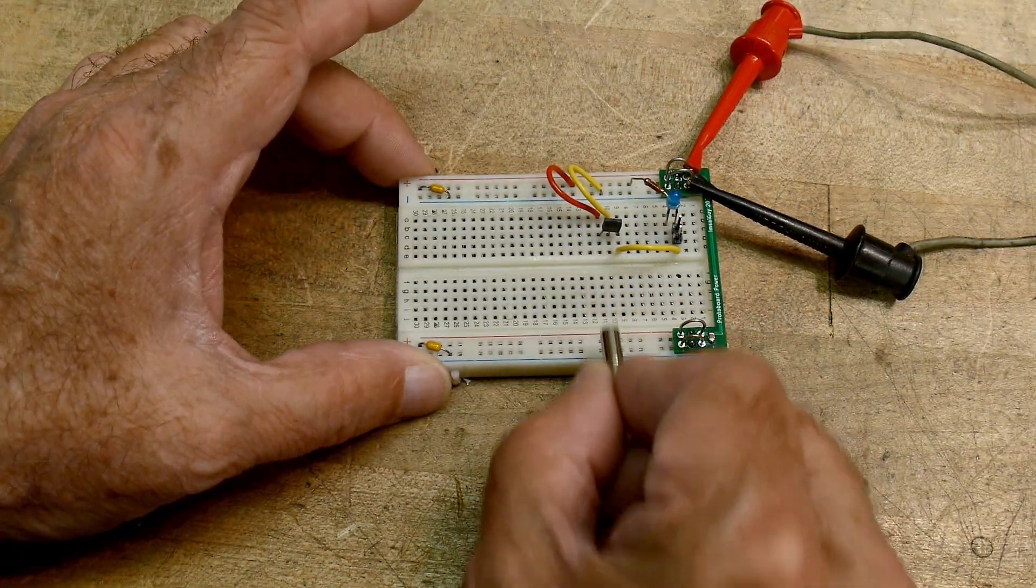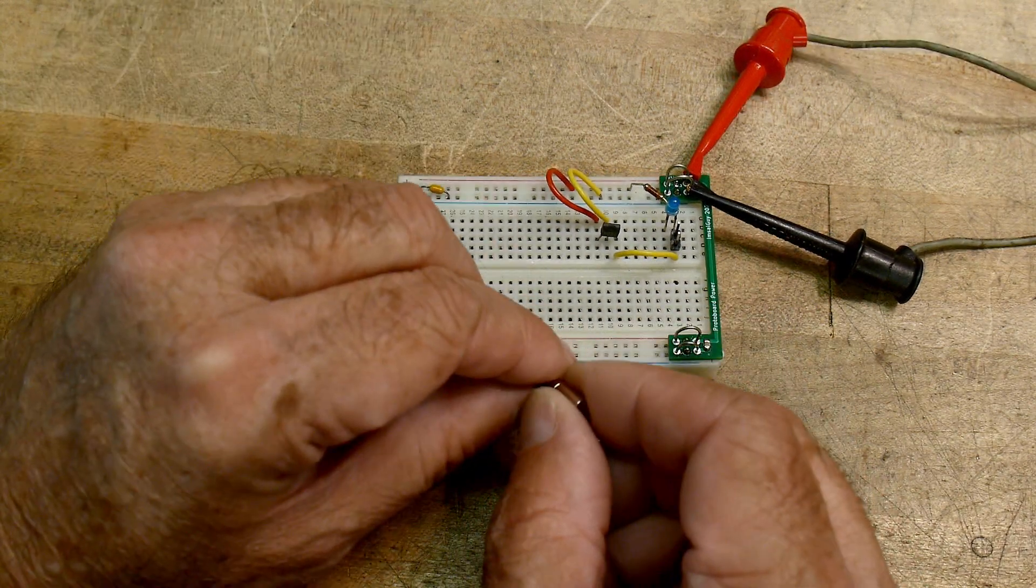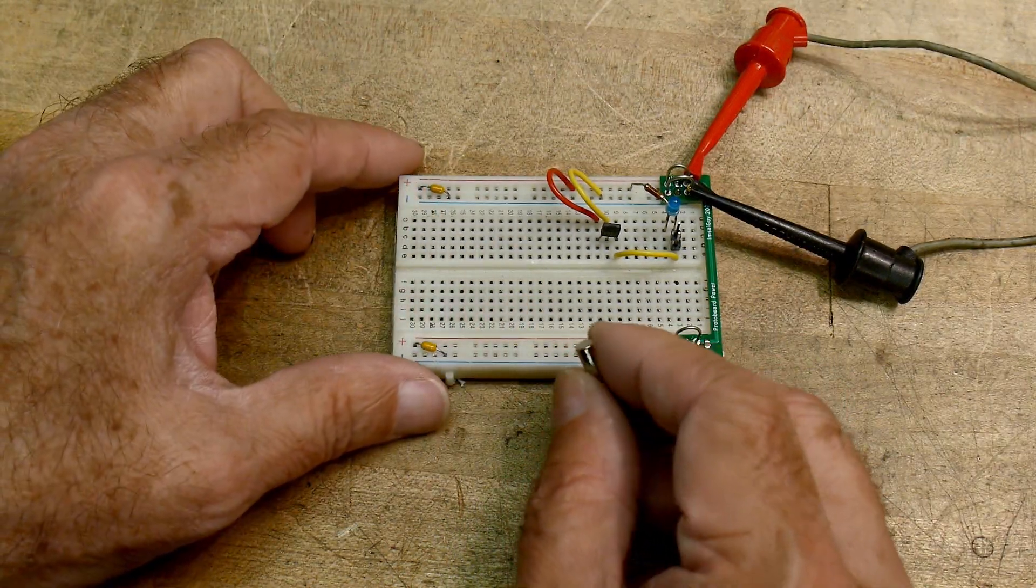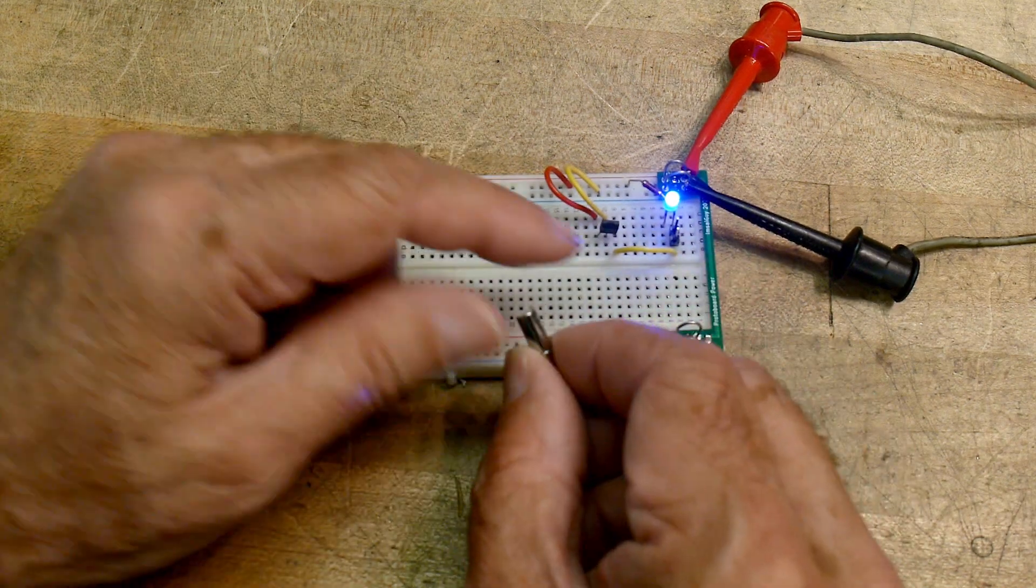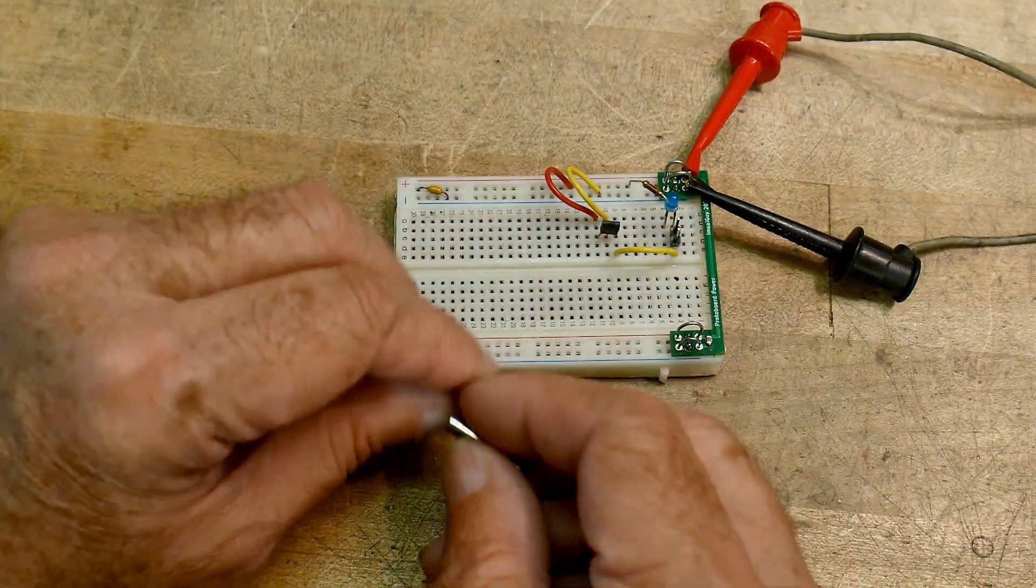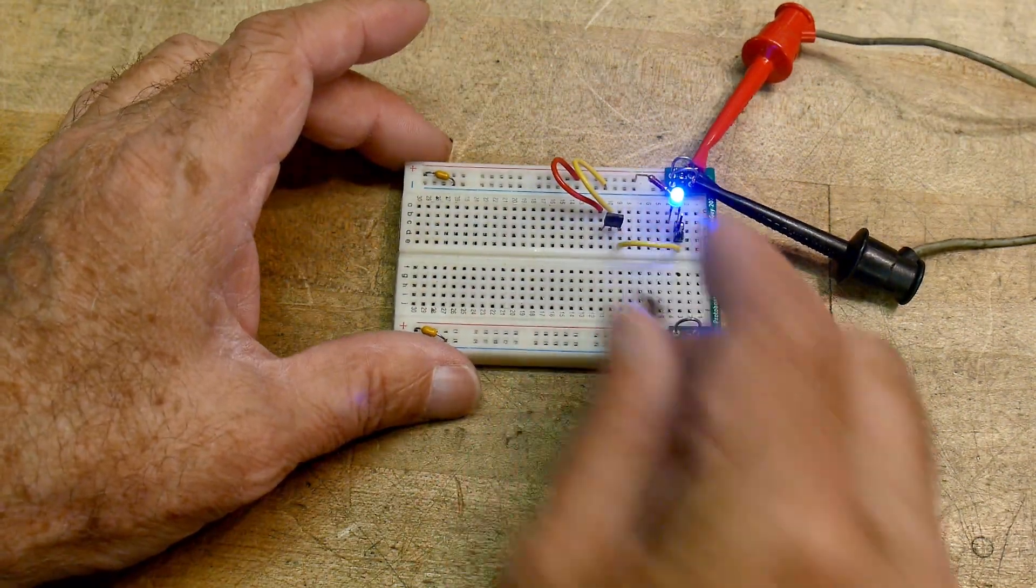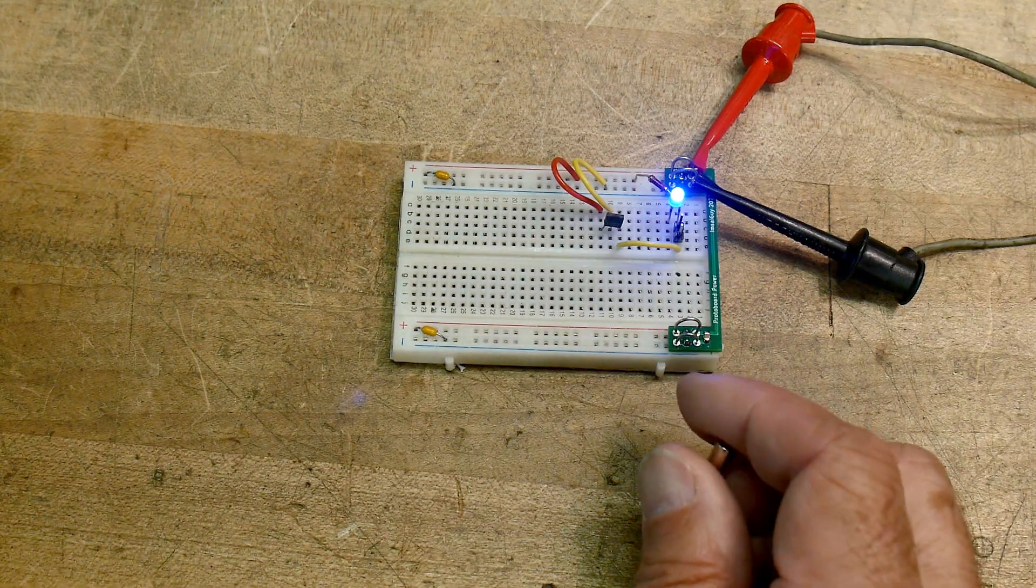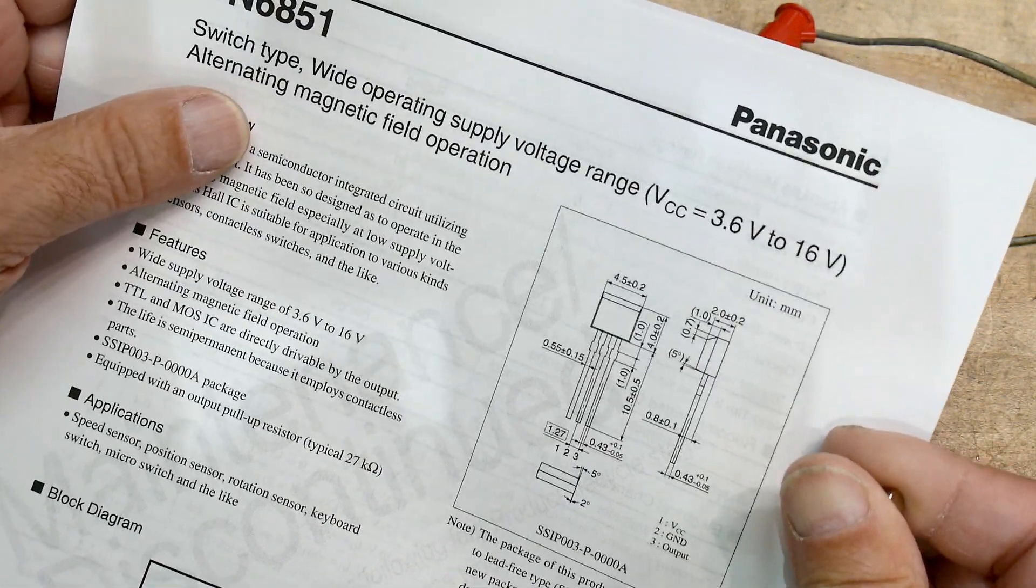But now I come in again, it doesn't switch. If I alternate to the other pole, it switches again. If I alternate, if I alternate. So what did the data sheet say? The data sheet said alternating magnetic field operation.